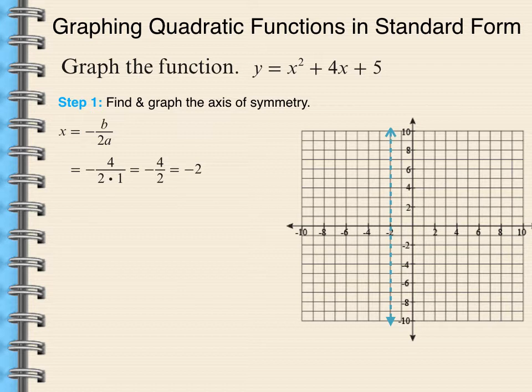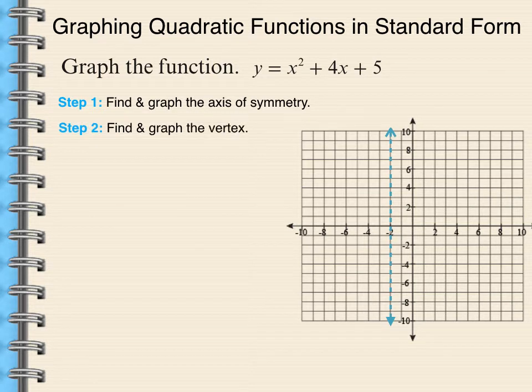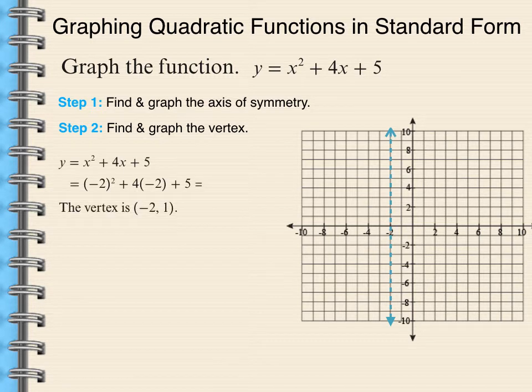Good idea to graph it on the coordinate plane. From there, we want to find and graph the vertex. Once again, this is going to be a minimum value because this parabola is going to open up. So we take our x equals negative 2 because that's the x-coordinate of my vertex. And I substitute that into the given equation. I square negative 2 and I get 4. 4 plus negative 8 is negative 4. Negative 4 plus 5 is 1. So I plot the point negative 2 comma 1, and that is my vertex. This is the turning point of my quadratic function when the curve is going to change from decreasing to increasing.